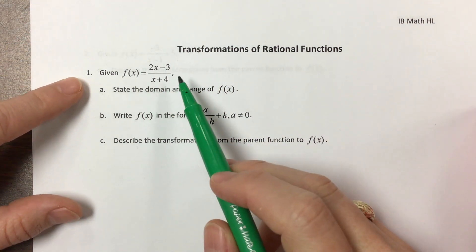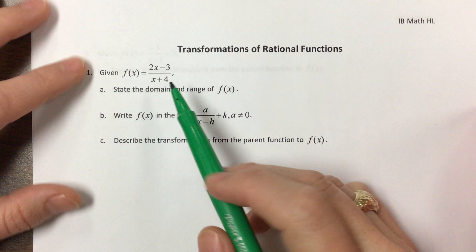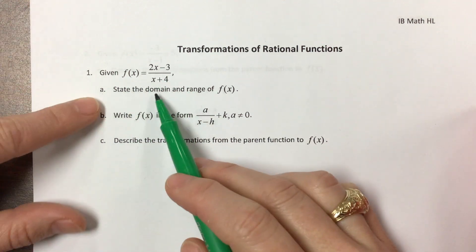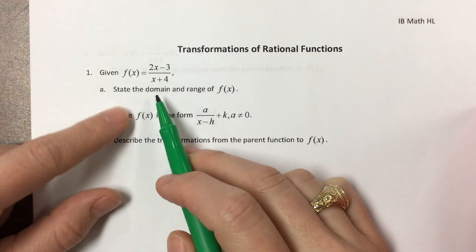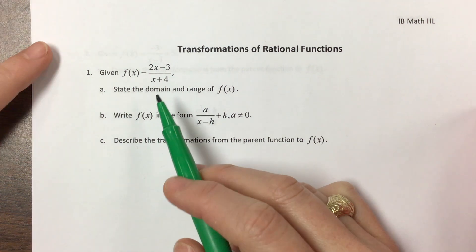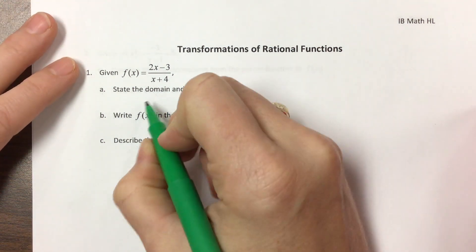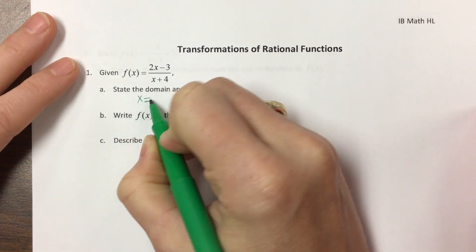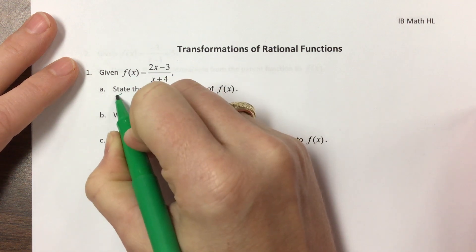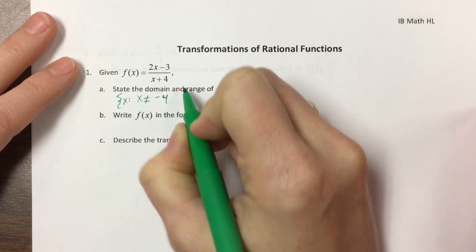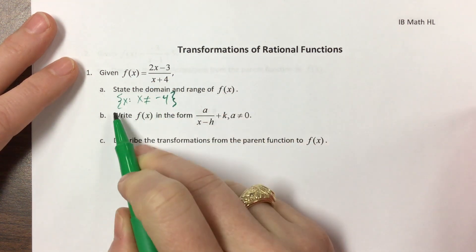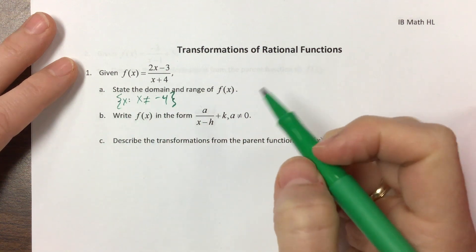As we get started, we have this rational function. I always tell my domain joke that Chuck Norris can divide by zero. We know that when it comes to the domain that x cannot equal negative four. So if you write that in set notation, you could say x is the set, it's a set x such that x is not equal to negative four.